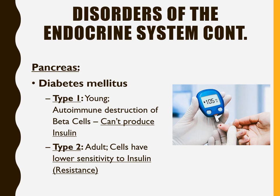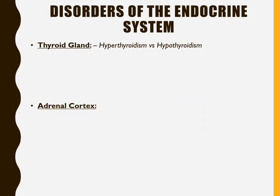Type two diabetes is more complex because even if you administer more insulin, cells may not respond. Usually high levels of insulin are needed to get a response. That's why many treatments for type two diabetes focus on improving cellular responsiveness to insulin rather than simply adding more insulin.